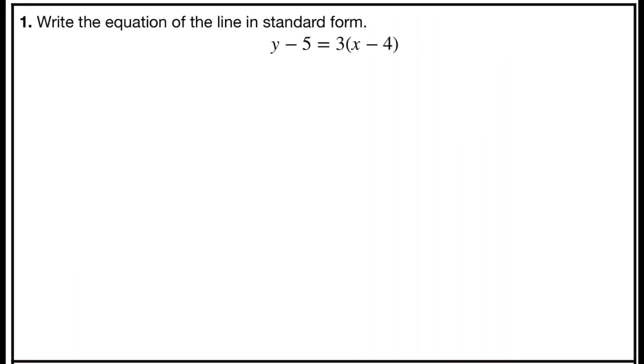Problem number one asks you to write the equation of the line in standard form. So this is given to you in point-slope form, which is y minus y sub 1 equals slope times x minus x sub 1. It's a very easy form to be able to enter in to write the equation of a line, because all you need to do is know a slope and a point. And you can start with the point-slope form.